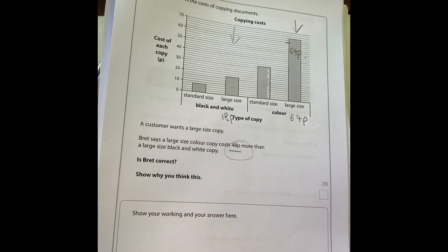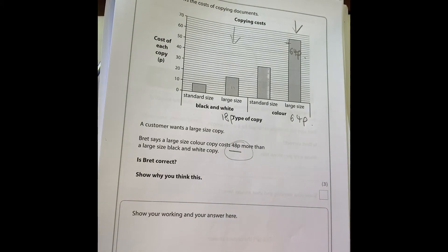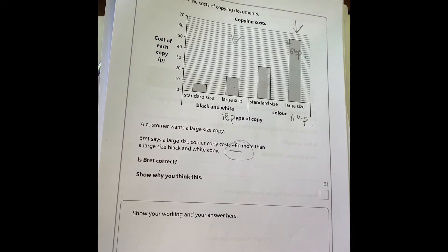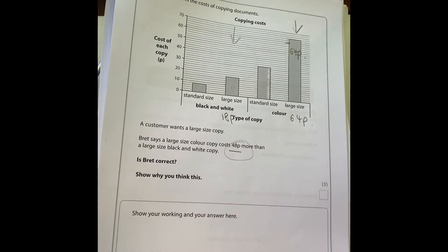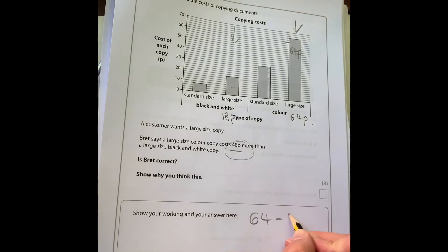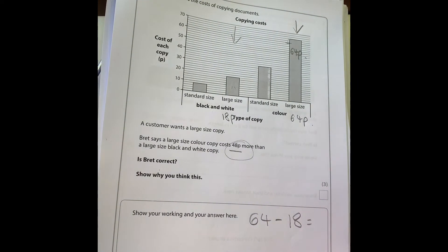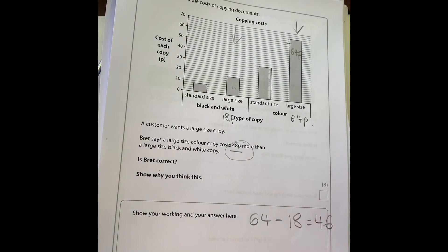Brett says the large color copy cost 48p more, so Brett is wrong. But I would show all your working out on there: show the 64, show the 18, and write the sum that you've done and show that it's 46, not 48.